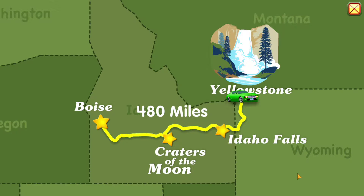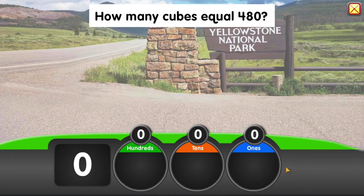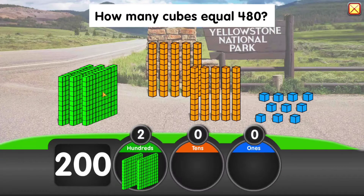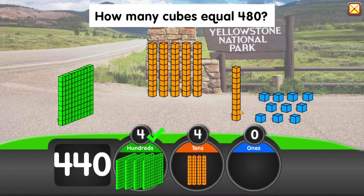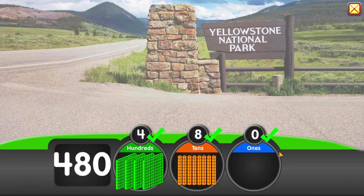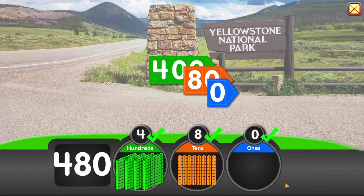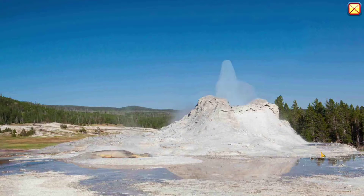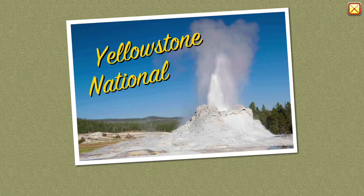We've driven 480 miles. How many cubes equal 480? 400 plus 80 plus 0 equals 480. Yellowstone National Park!